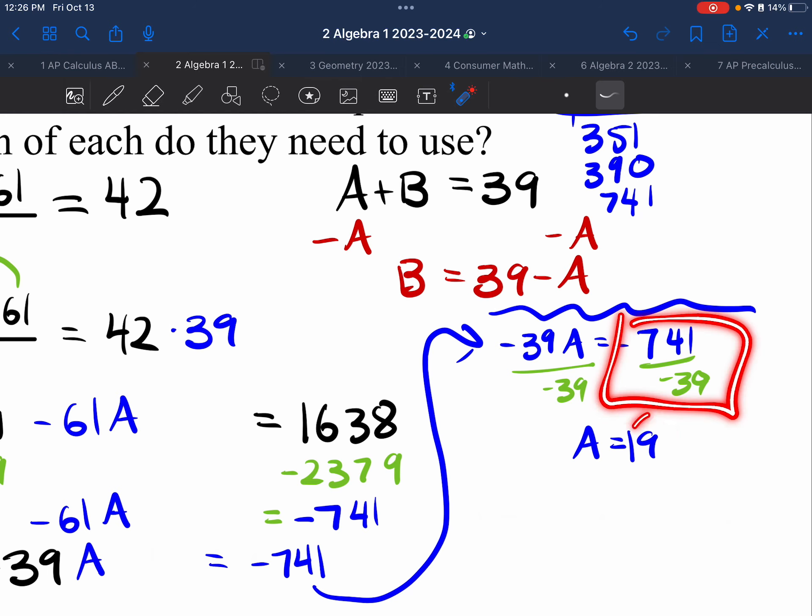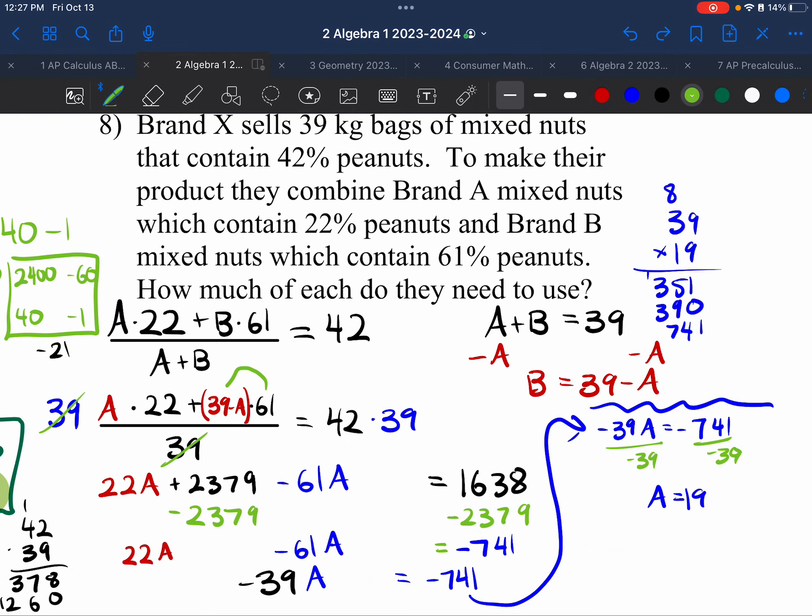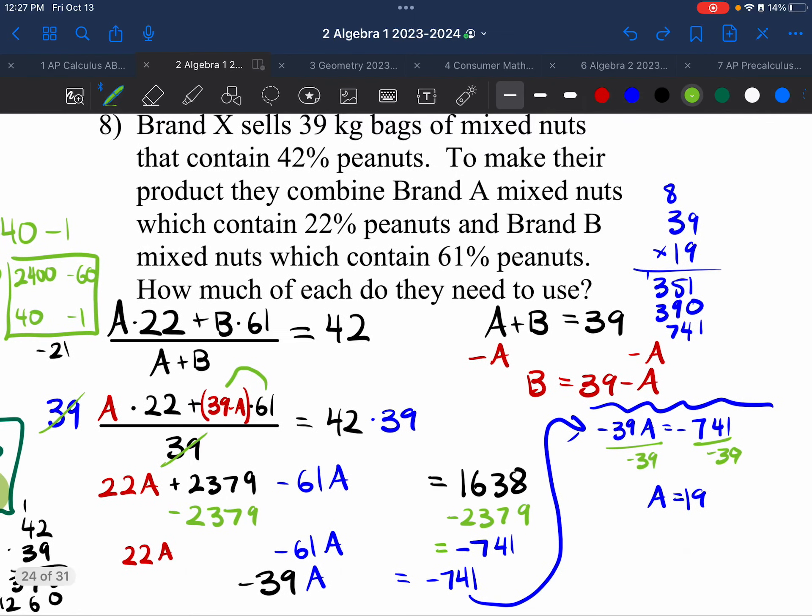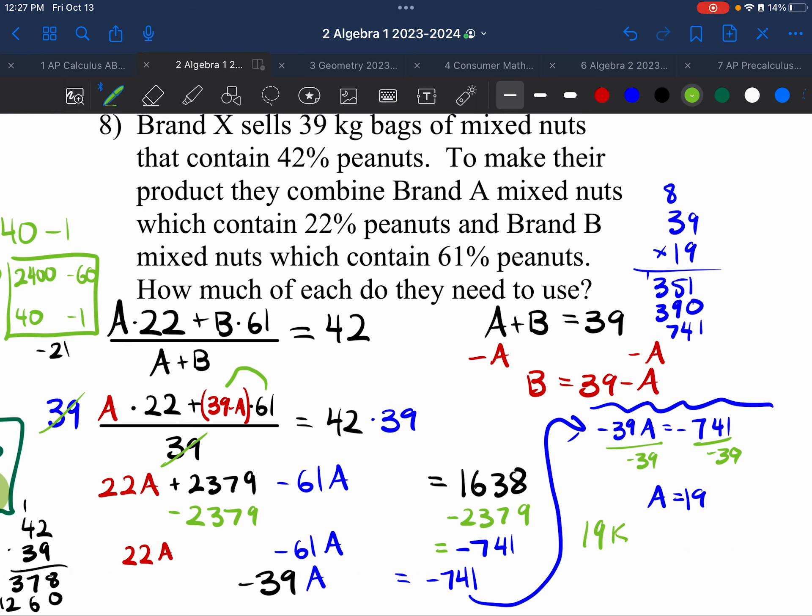And I literally could have just punched this into the calculator and made it my life way easier. But I chose to take the harder path. I wanted to learn something. I got... Wait. Don't want to unbox 19. I need to interpret the question. How much of each do I need to use? Well, A needs that many kilograms because it's an amount, right? So, I know that we need 19 kilograms of A and some kilograms of B. Well, how do I figure out B? Here's the trick. I know this A is this A. A is 19. So, 19 plus what is 39? Well, 20. Plus 19 is 39. So, this must be 20 kilograms of brand B.